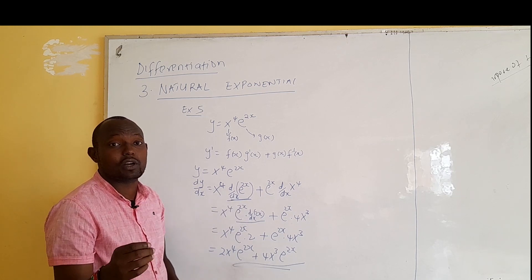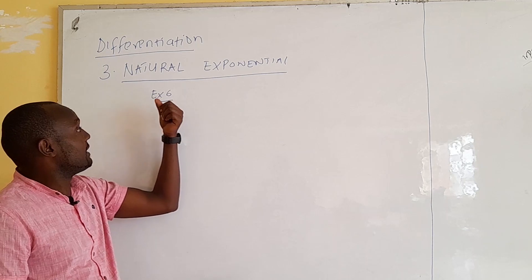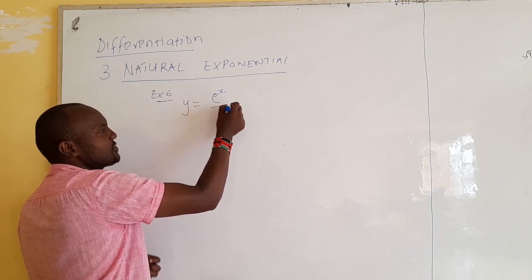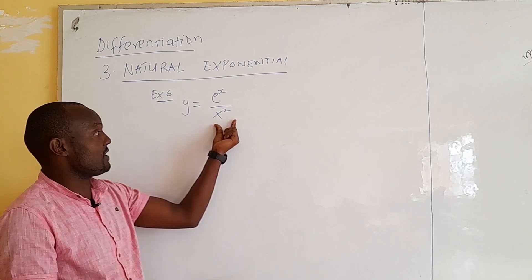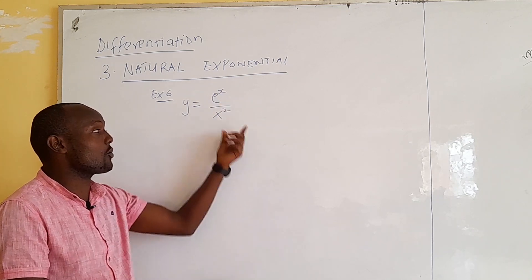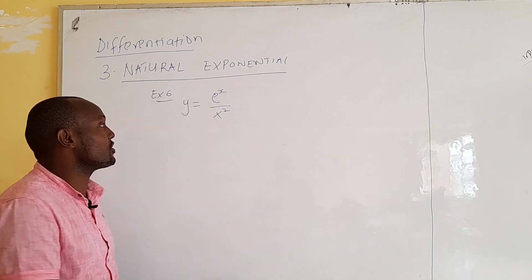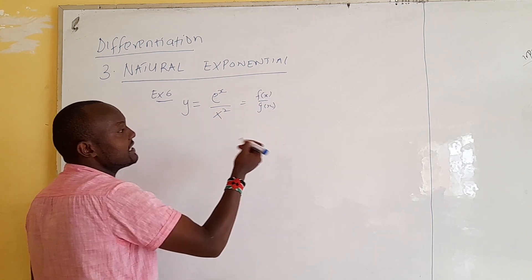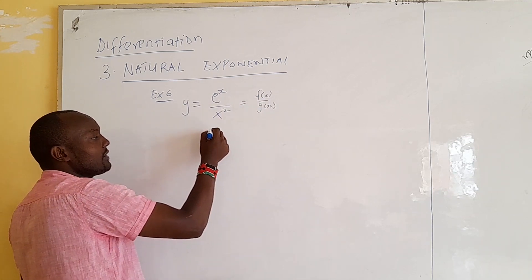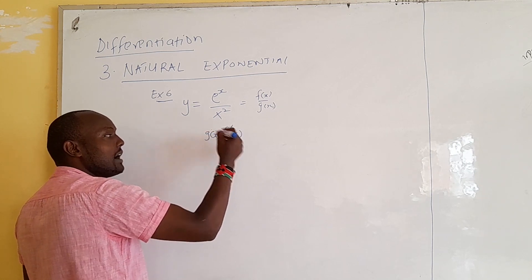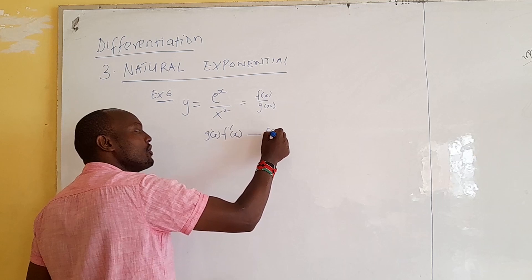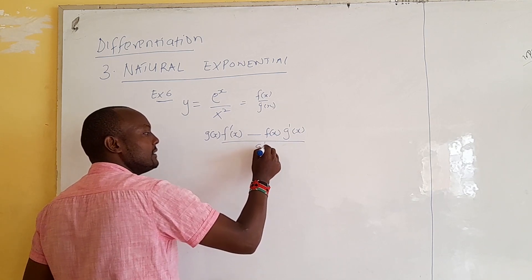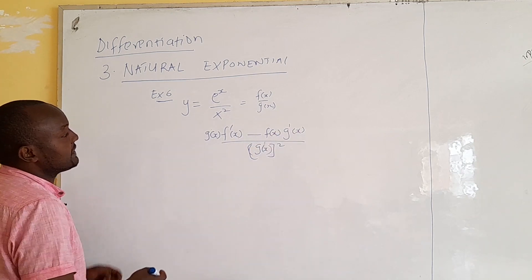Example 6: we look at a situation where you have an exponential and a polynomial, reminding ourselves how we solve this using the quotient rule. If you are given y equals f(x)/g(x), we hold g(x) constant and differentiate the numerator, minus hold the numerator constant and differentiate the denominator, all over the denominator squared.